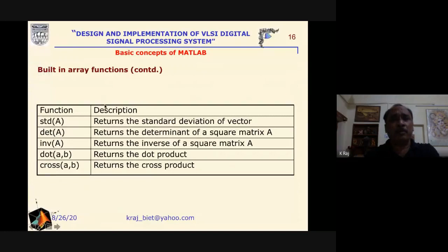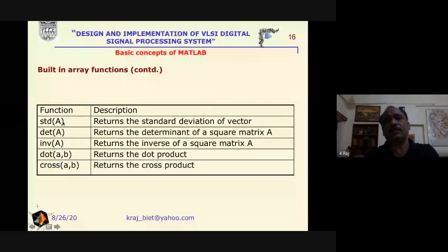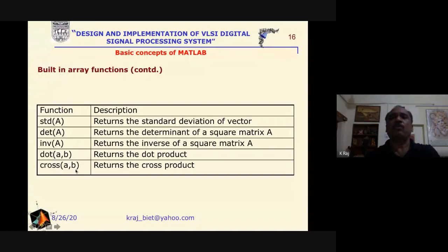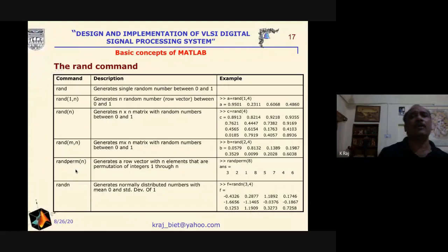Continuing array functions: for standard deviation write std(a), which returns the standard deviation of the vector. Writing det(k) returns the determinant of the square matrix k. To get the inverse of any matrix, write inv(a). For the dot product of two vectors a and b, write dot(a, b). For the cross product write cross(a, b). These commands are very simple — the same as used in routine life.